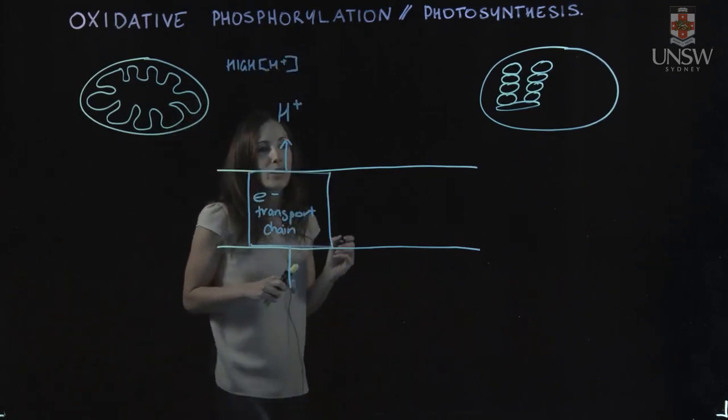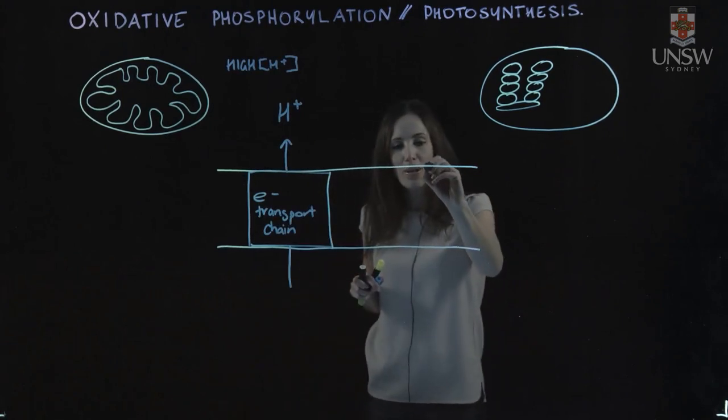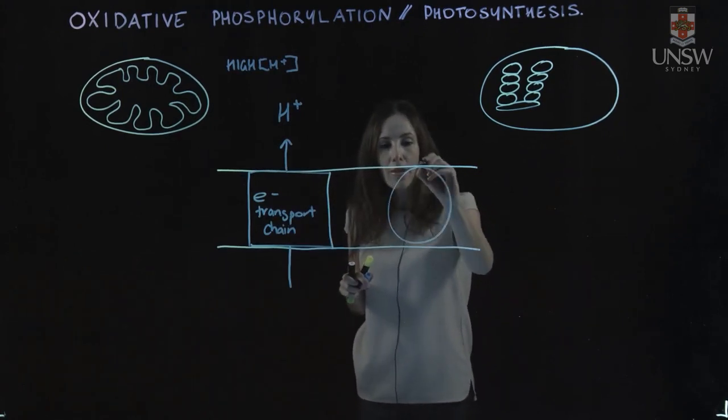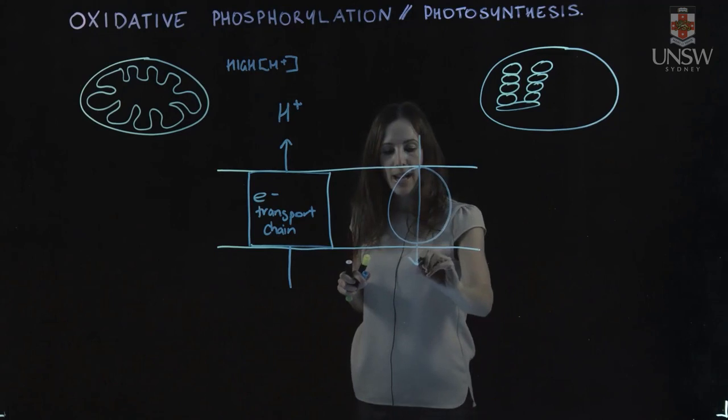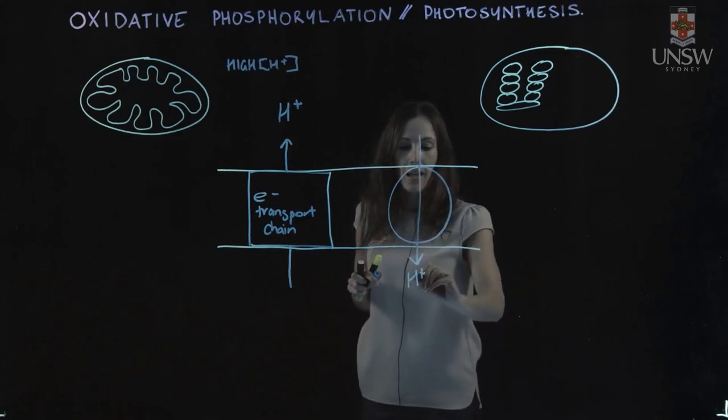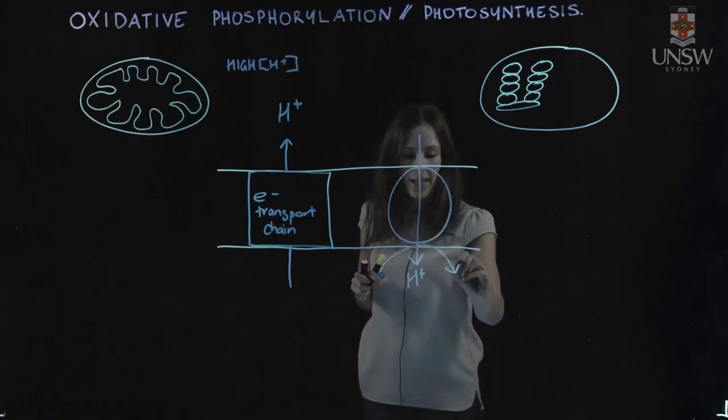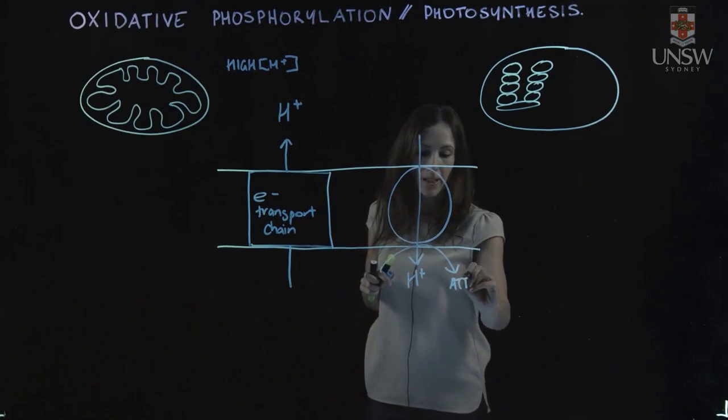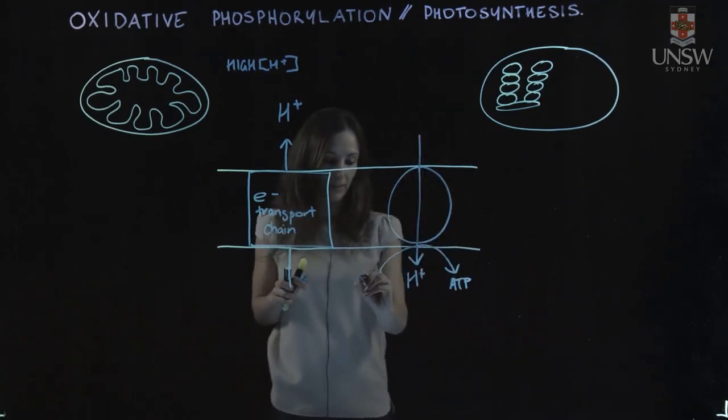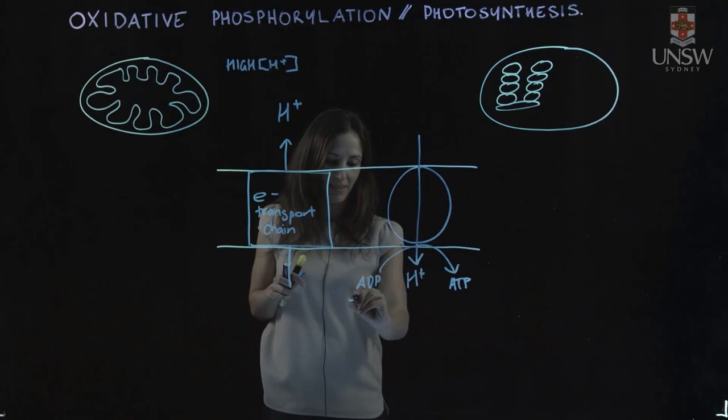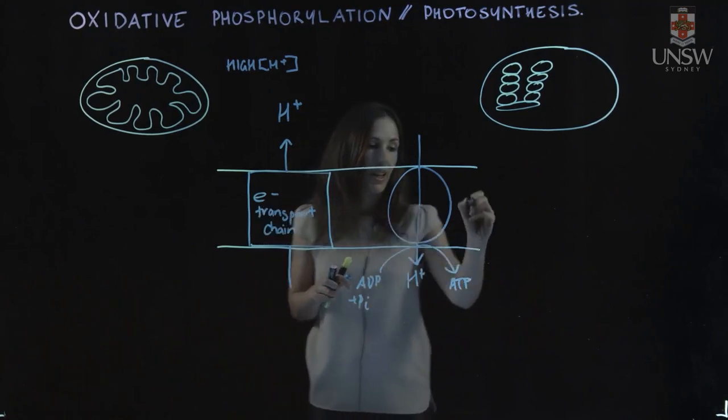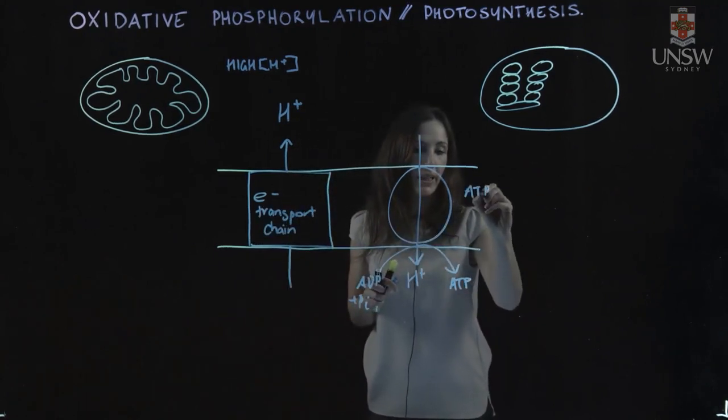That high proton concentration means the protons then move back through a protein called ATP synthase, and in that way, they generate ATP. So here's our ATP being created, and this is the protein ATP synthase.